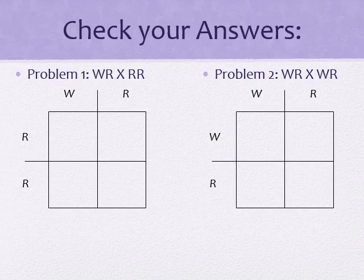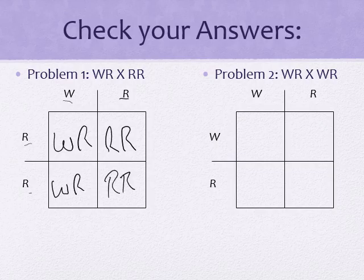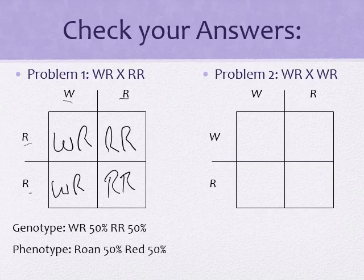Let's go ahead and check our answers. In the first one, we were crossing a roan bull with a red cow. The roan bull is on top and the red cow is on the side. Our Punnett square gives us: first box WR, second box RR, third box WR, and fourth box RR. So our genotypes are 50% WR and 50% RR. The phenotypes are a 50% chance of being roan, courtesy of WR, and a 50% chance of being red, from RR.